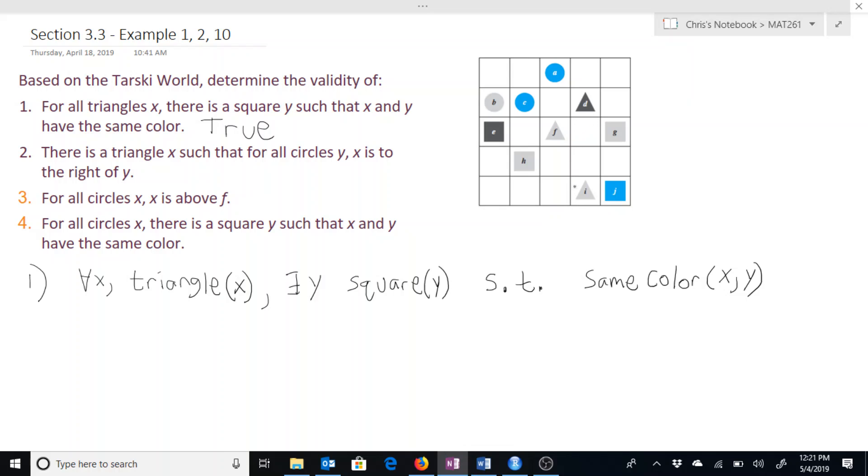Since all of the circles are to the left of that, so those two triangles are to the right of these three circles. So this is true.